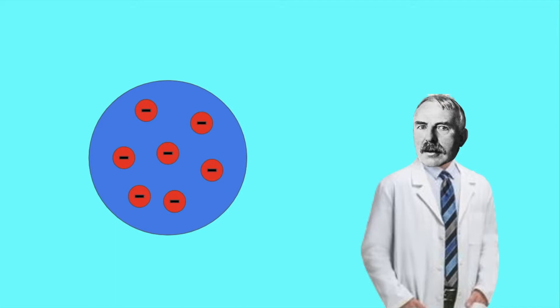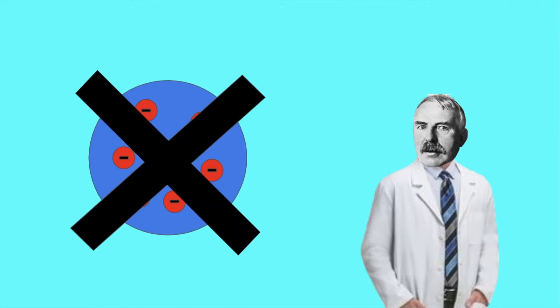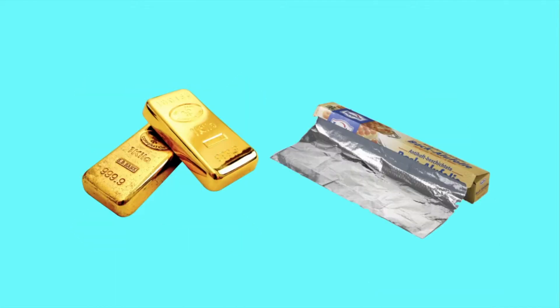The plum pudding model was disproved by Ernest Rutherford in his gold foil experiment. This experiment was to shine a light at a gold foil and to see how the particles reacted to it. When this experiment was carried out, Rutherford found that some of the particles bounced off of it.